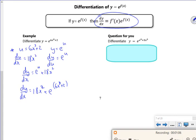Remember what I said to you: just differentiate the power, stick it at the front, and write down the original bit. Differentiate the power, stick it at the front, write down the original bit.